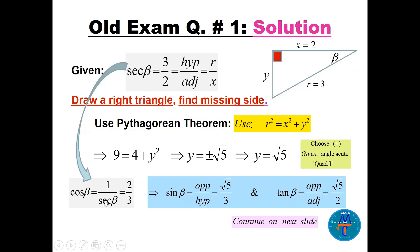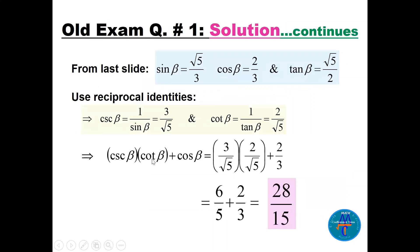Now from secant beta I can go directly to cosine beta — it is the reciprocal. Sine beta by definition is the opposite over the hypotenuse, so sine beta equals square root of 5 divided by 3. Tan theta is the opposite over the adjacent. Now cosecant beta is the reciprocal of sine beta, so 3 over square root of 5.